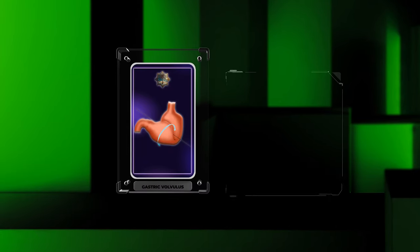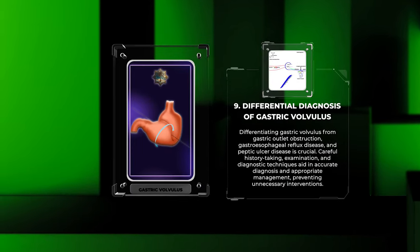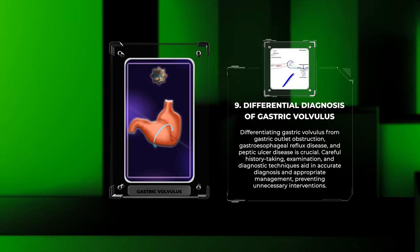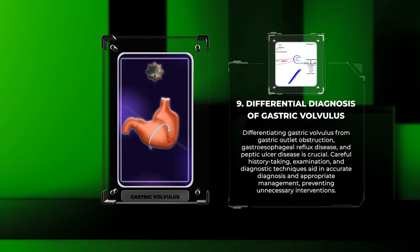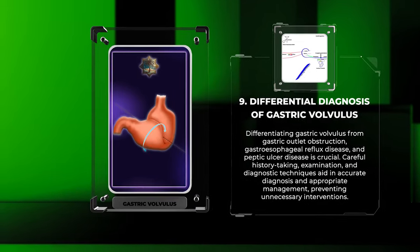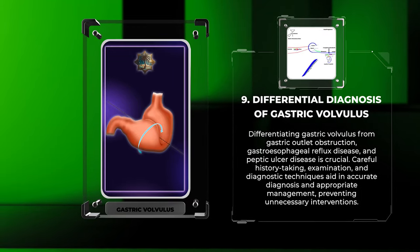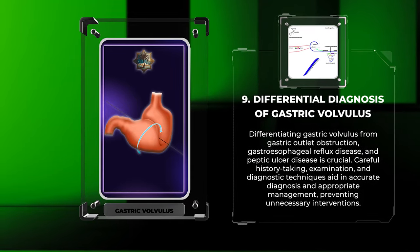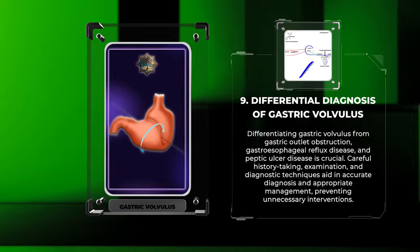Differentiating gastric volvulus from gastric outlet obstruction, gastroesophageal reflux disease, and peptic ulcer disease is crucial. Careful history-taking, examination, and diagnostic techniques aid in accurate diagnosis and appropriate management, preventing unnecessary interventions.